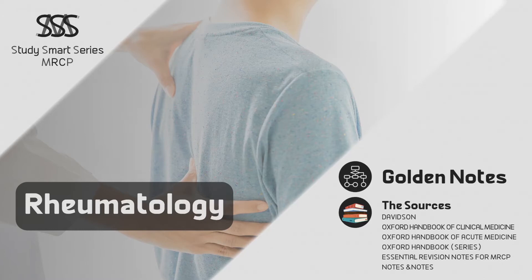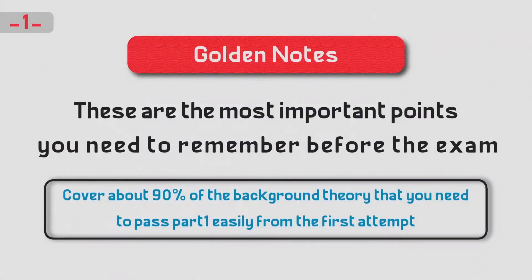Definition: osteomyelitis is an infection of bone marrow and bone. The acute form develops within days or weeks. The chronic form develops slowly over months or years and is associated with avascular bone necrosis and sequestrum formation within the bone.